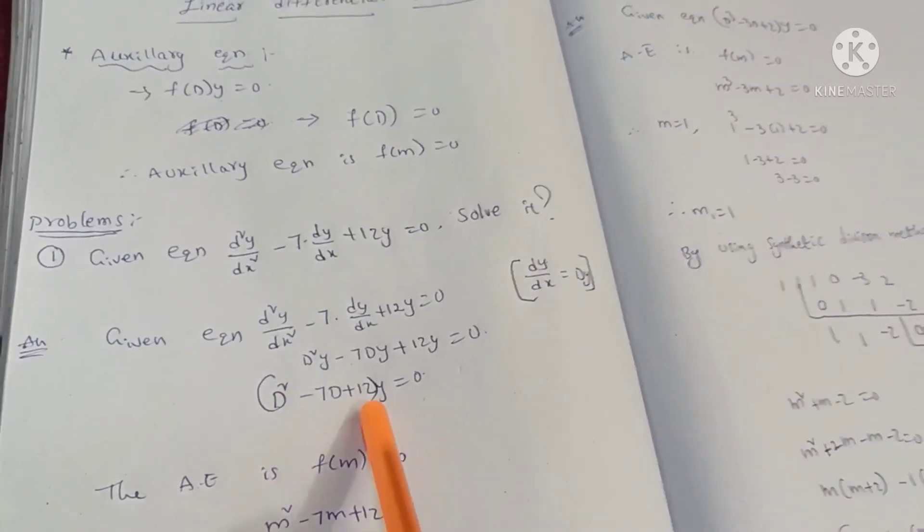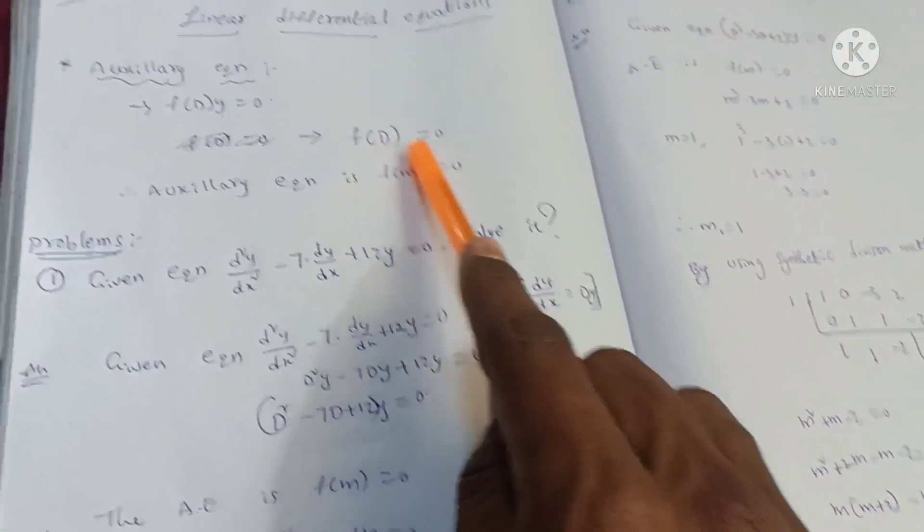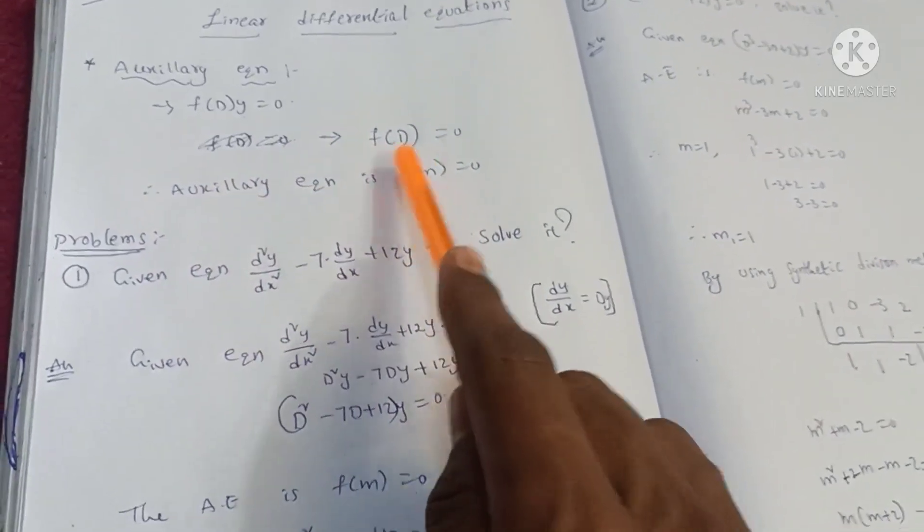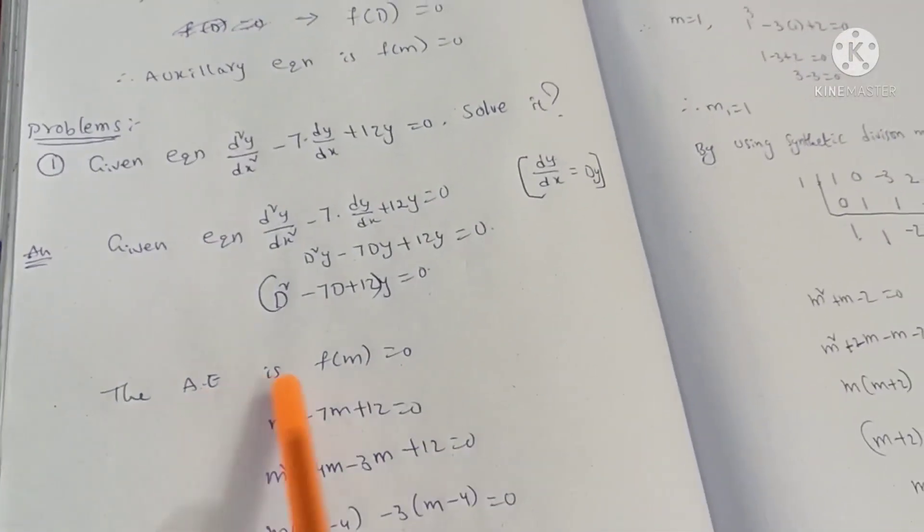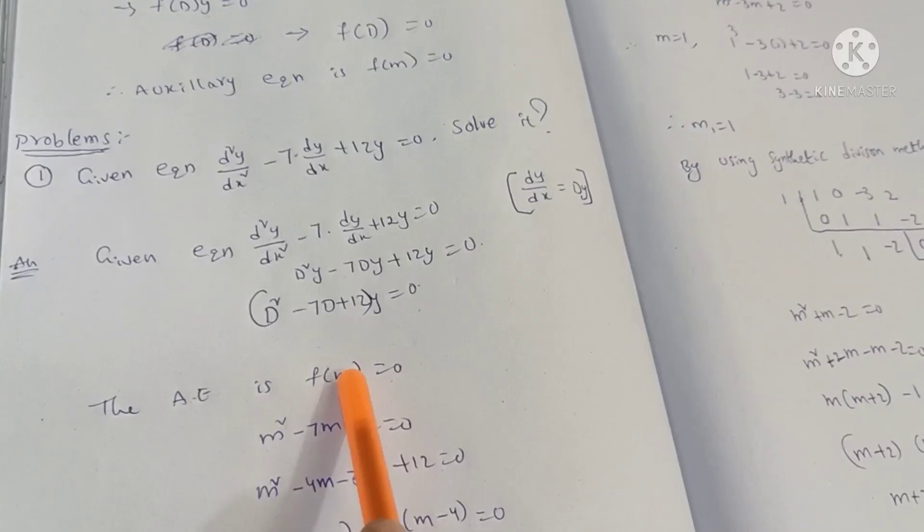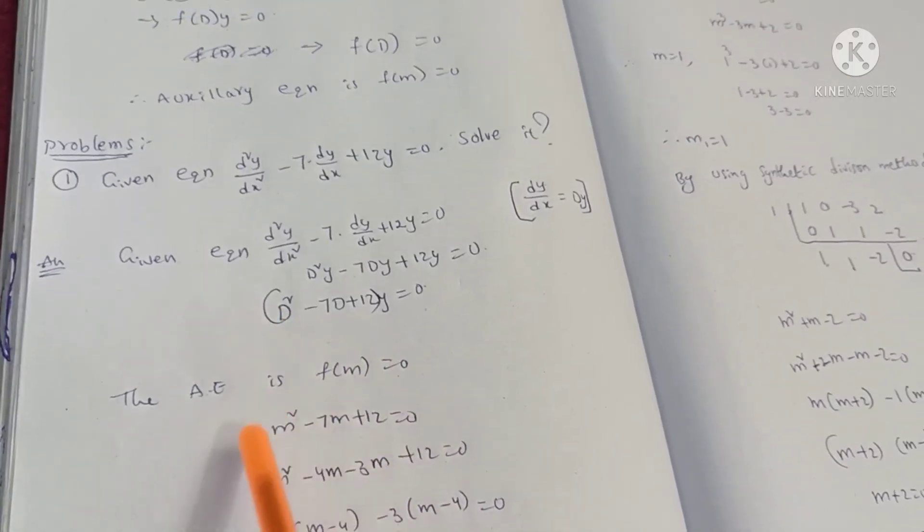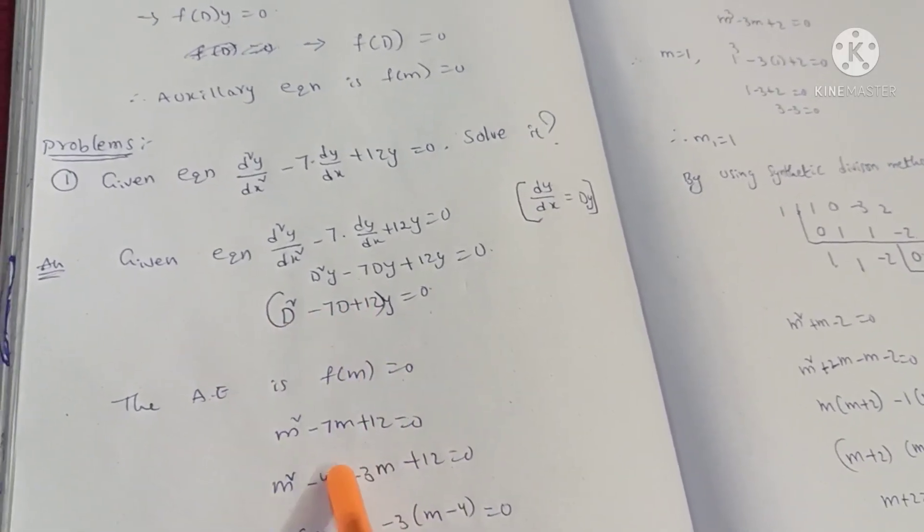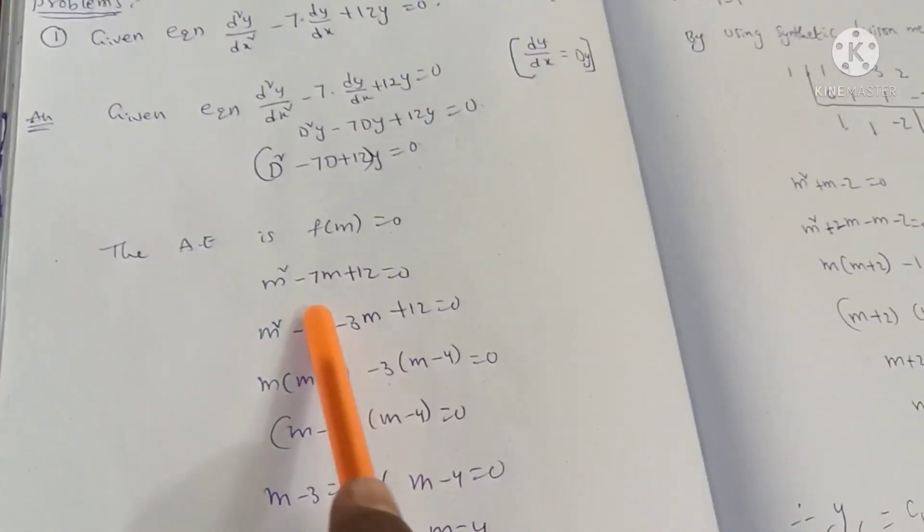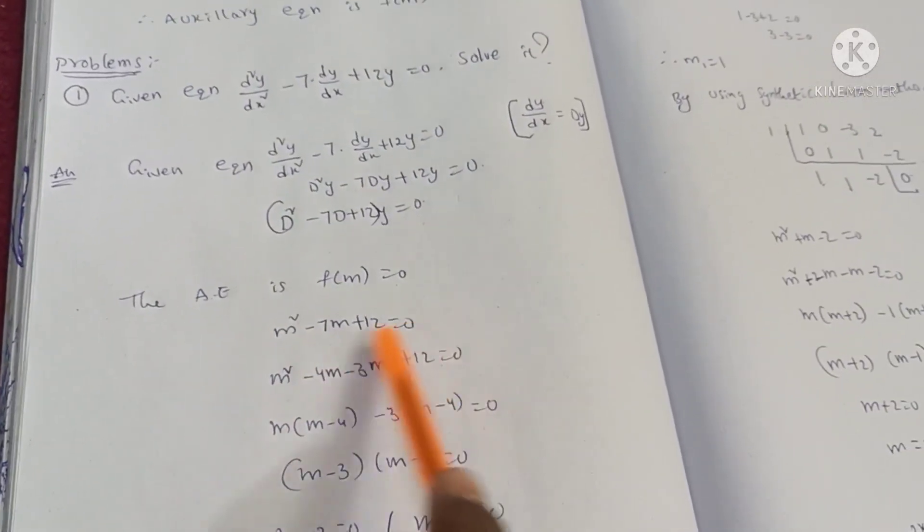Now, f(D) equals 0. This is the auxiliary equation. The auxiliary equation is f(m) equals 0. Now, D equals m. m² minus 7m plus 12. Now, m² minus 7m plus 12 equals 0.